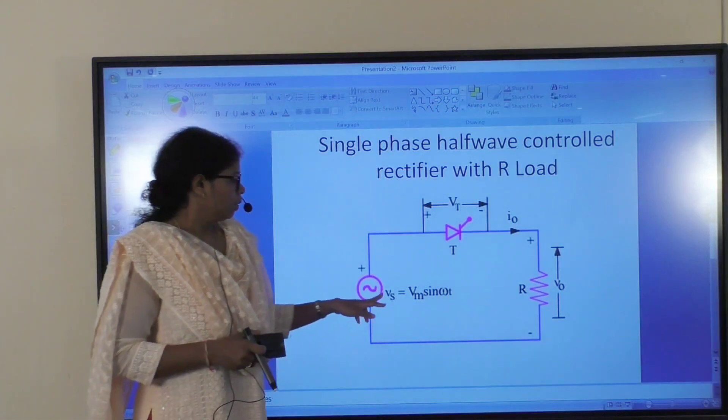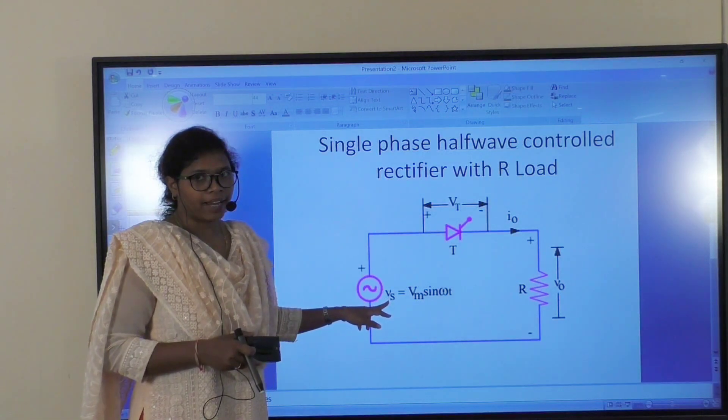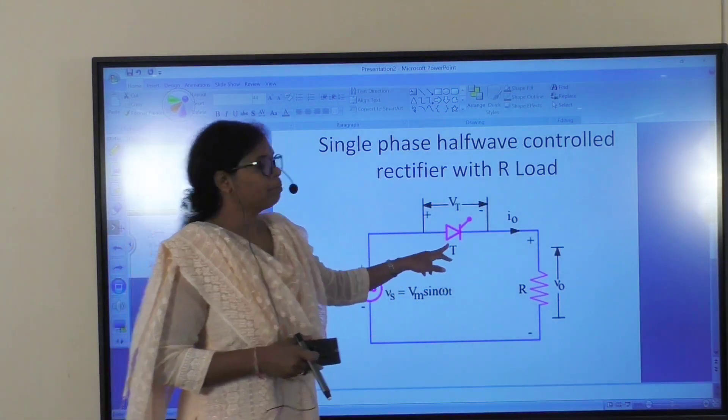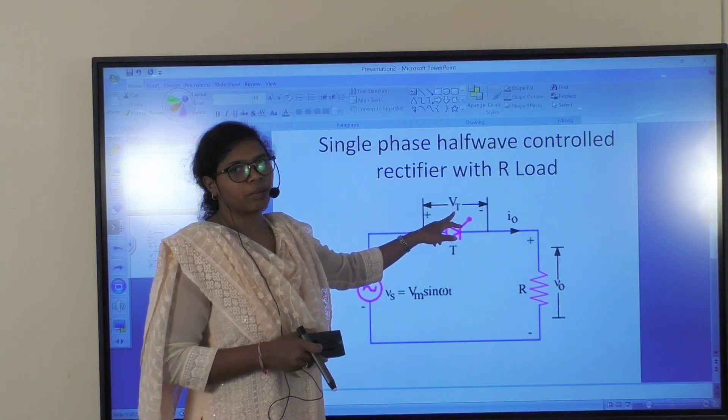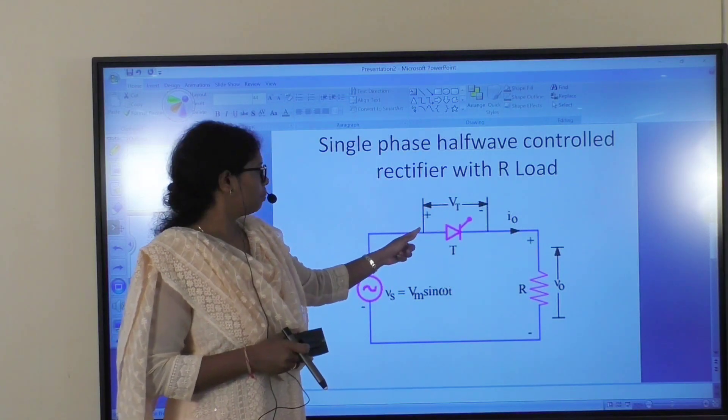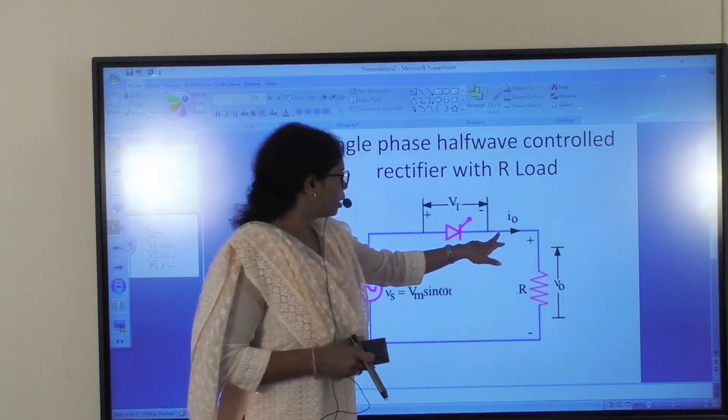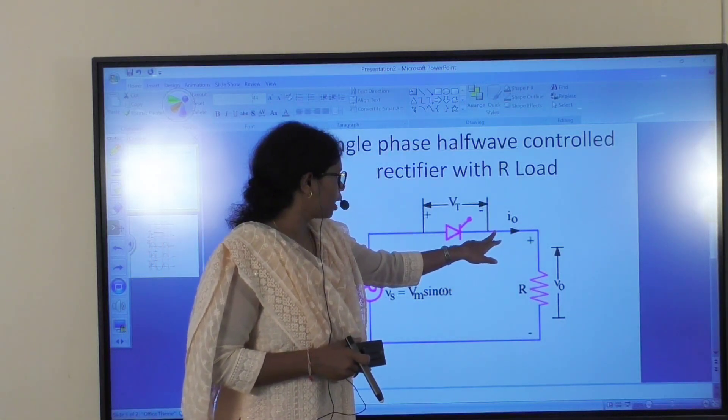Here, Vs is denoted as source voltage, T is the thyristor, VT is the voltage drop across the thyristor, A means anode, and K means the cathode.